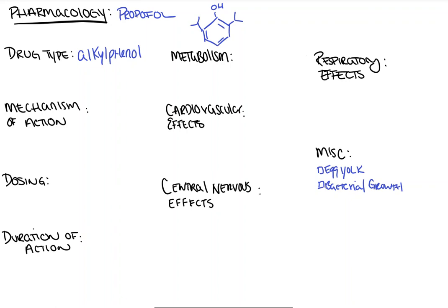Now let's move on to the mechanism of action. The mechanism is thought to be via GABA — an inhibitory signal in our central nervous system. Specifically, propofol increases the time that the chloride channel is open when stimulated. Since GABA is inhibitory, this puts patients to sleep. To help you remember this: alcohol also acts on GABA, and so the way I think about it is that propofol basically makes you instantly blackout drunk.